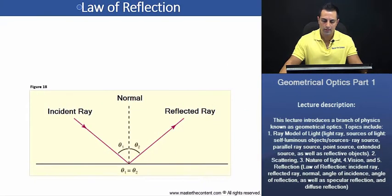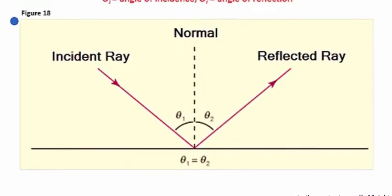Now, let's begin here by taking a look at figure 18. A ray of light heading towards an object is called an incident ray. If it reflects off the object, it's called a reflected ray.